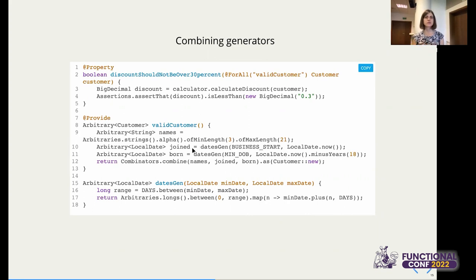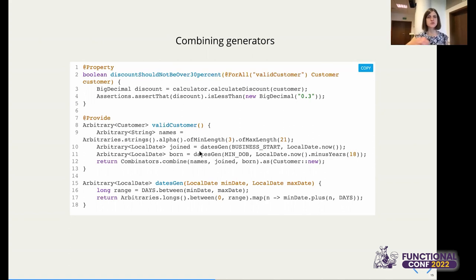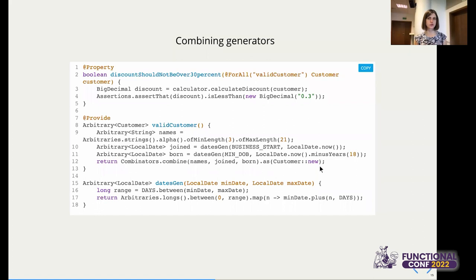You provide different start and end ranges depending on what you want to generate. For the date the customer joined, the earliest date is the start of our business and the latest is today. For the date of birth it's different — the minimum could be very far in the past (ask your product owner), and the maximum is 18 years ago, because maybe your terms require customers to be at least 18 years old. This way you have two generators defined exactly according to your business rules, and then you combine those three generators to produce a generator of valid Customers.